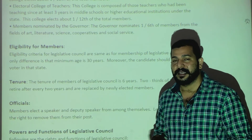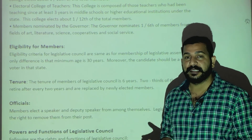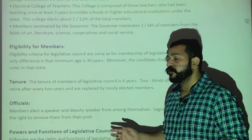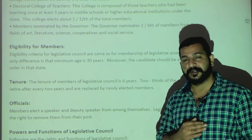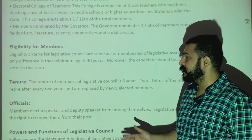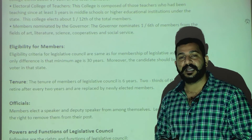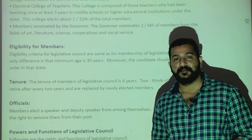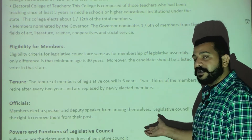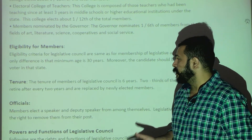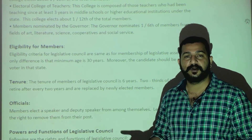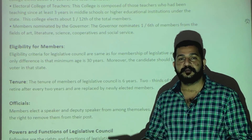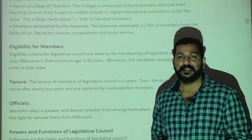One-third of the Legislative Council members retire every 2 years. Since the tenure is 6 years, one-third retire every 2 years, so new members are elected or nominated to fill those positions. Unlike the Legislative Assembly, the Legislative Council does not dissolve — it is a permanent house where members keep retiring and being replaced in rotation.